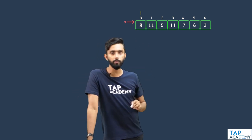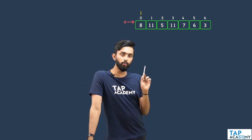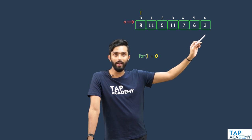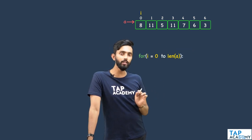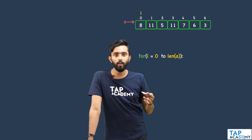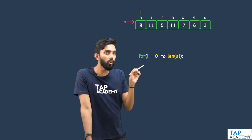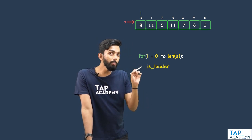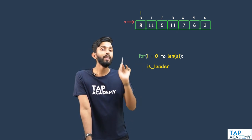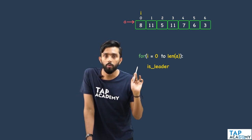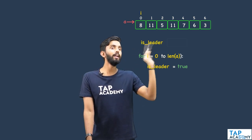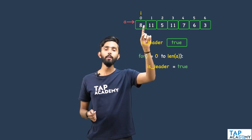I'll run a loop: for i beginning from 0 to the length of the array. Inside this, I don't know if the ith element is a leader, so I'll create a boolean variable called isLeader and initially make it true — I am assuming the ith element is a leader. Then I'll write code that validates my assumption.